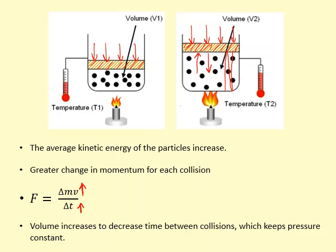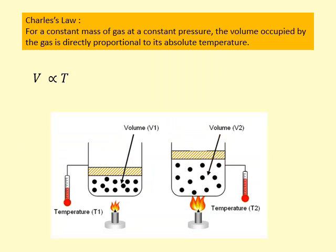Charles's law states that for constant mass and constant pressure, so the same number of particles and constant pressure, the volume occupied by the gas is directly proportional to its absolute temperature. Absolute temperature means we need to use Kelvin from now on. You can't use degrees Celsius or you'll get it wrong. You can write this as V is directly proportional to T, or V over T equals constant, or V1 over T1 equals V2 over T2.